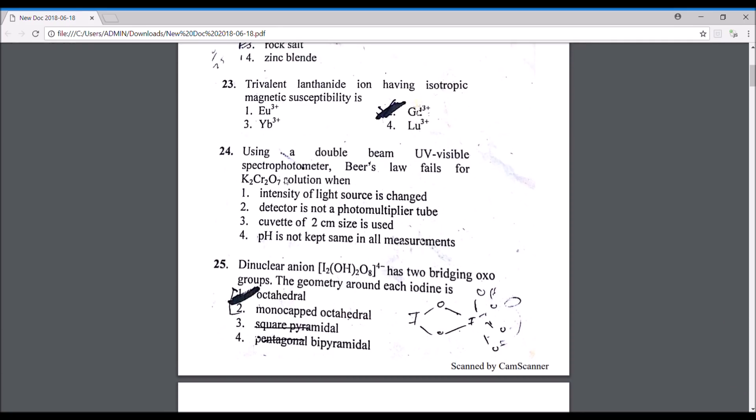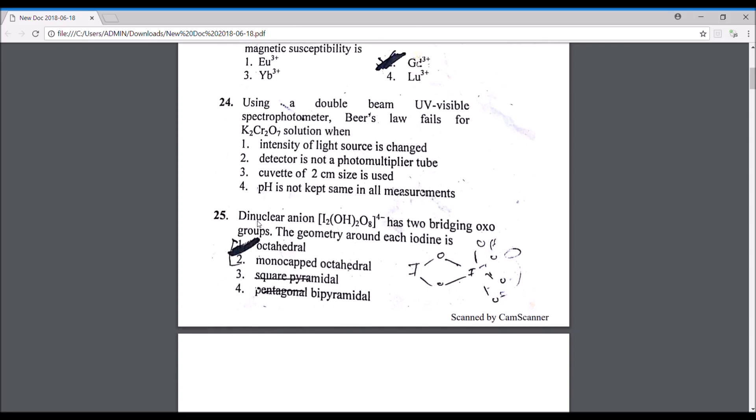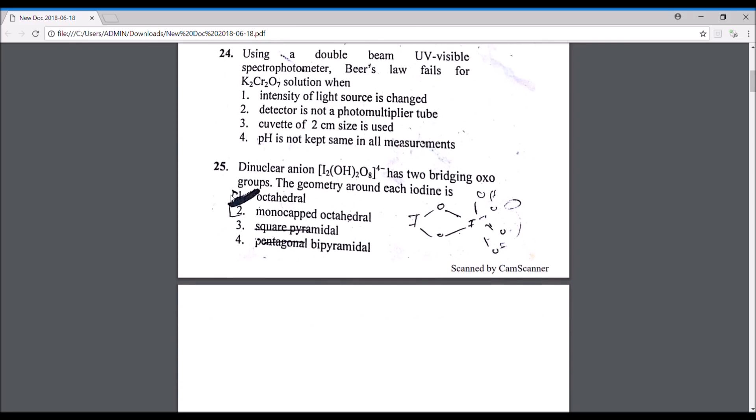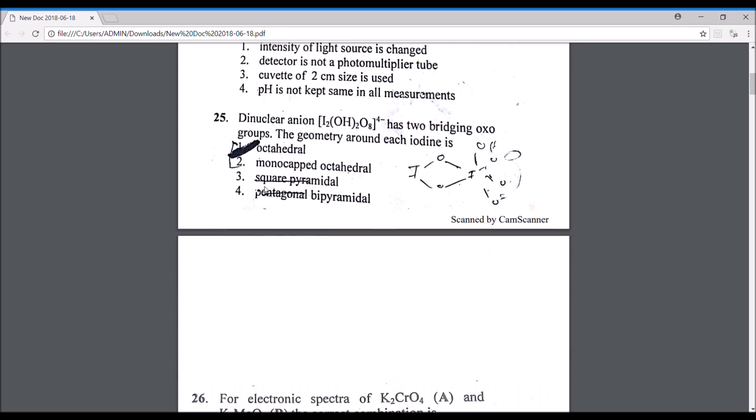On change in pH, this potassium dichromate solution changes from orange to yellow depending on the pH, so if pH is not kept constant, Beer's law will fail. This dinuclear anion, the periodate, has two bridging oxo groups, so the geometry around each iodine is octahedral. I think it's going to be octahedral, but it could be mono-capped octahedral. I'm 80% sure that it's going to be octahedral.